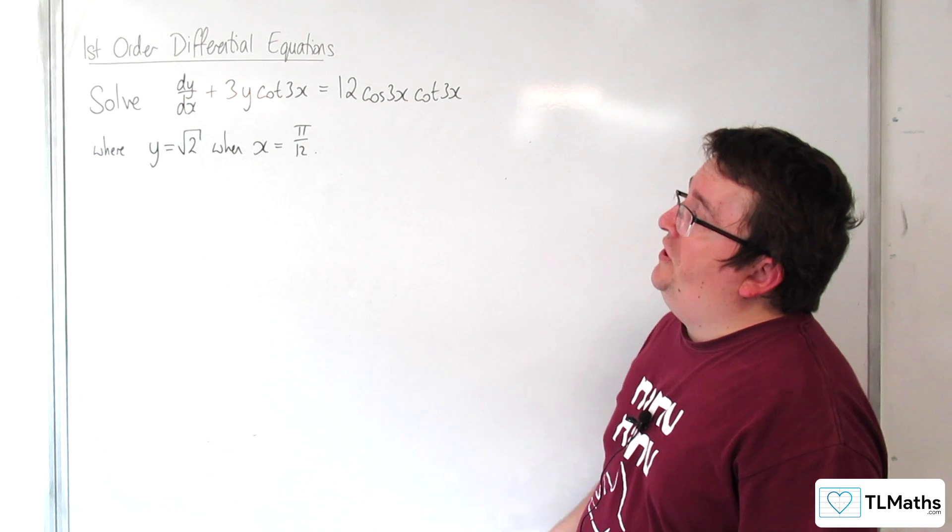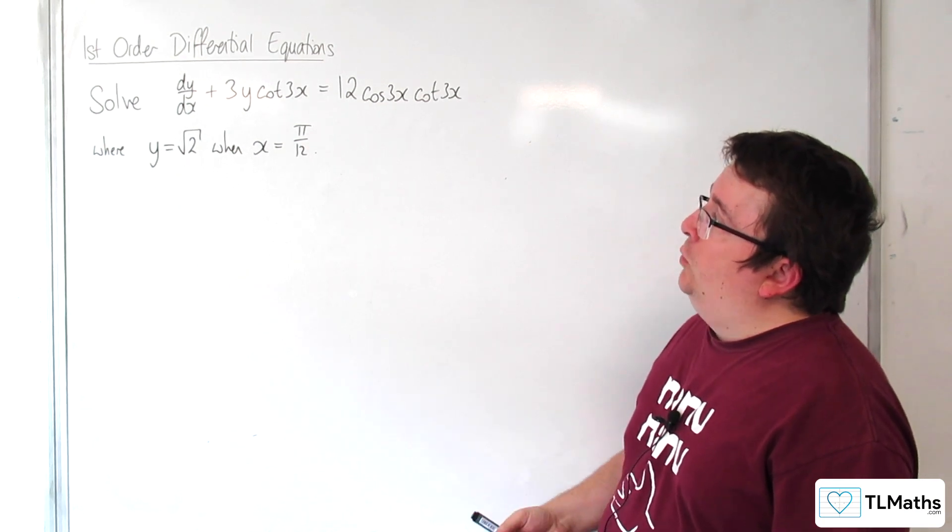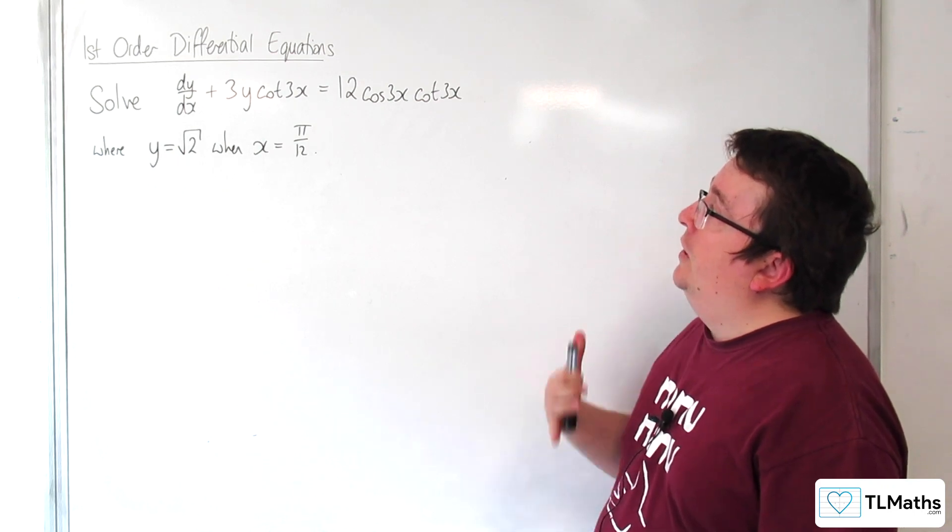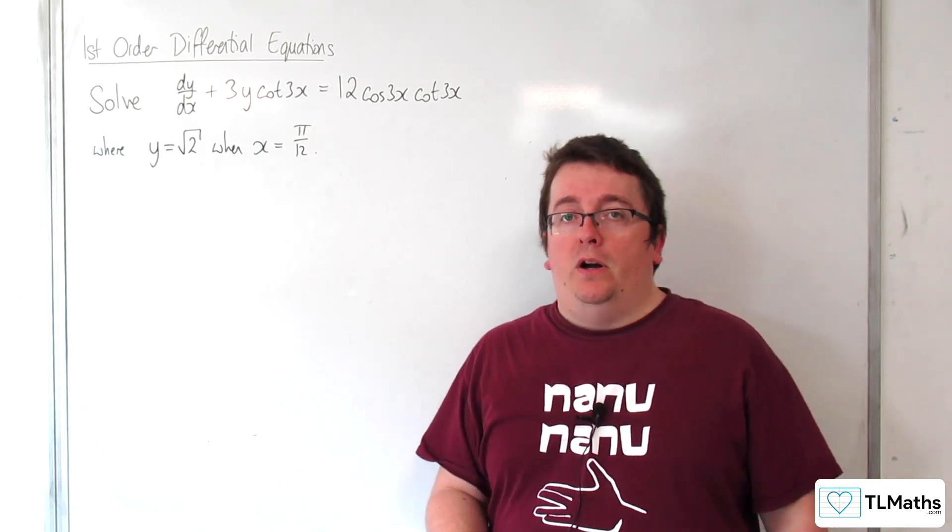In this video, we're going to solve dy by dx plus 3y cot 3x equals 12 cosine 3x cot of 3x, where y is equal to root 2 when x is equal to pi over 12.